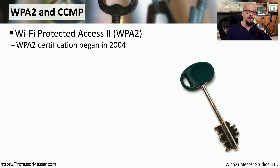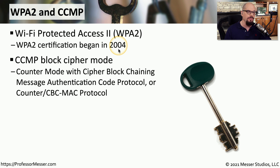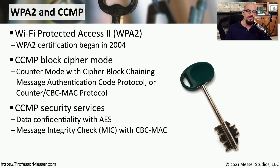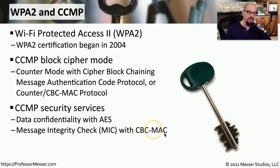WPA2, or Wi-Fi Protected Access 2, is a wireless security type that has been around for a very long time, beginning certification in 2004. It uses an encryption called CCMP — Counter Mode with Cipher Block Chaining Message Authentication Code Protocol, or Counter/CBC-MAC Protocol. CCMP uses AES for confidentiality of the data, and CBC-MAC for the message integrity check, or MIC.